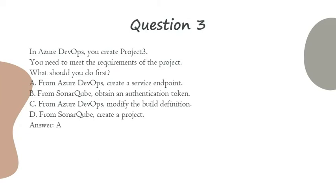Question 3. In Azure DevOps, you create project 3. You need to meet the requirements of the project. What should you do first? A. From Azure DevOps, create a service endpoint. B. From SonarQube, obtain an authentication token. C. From Azure DevOps, modify the build definition. D. From SonarQube, create a project. Answer: A.